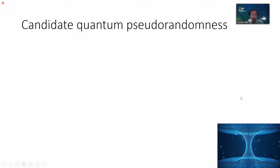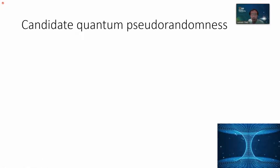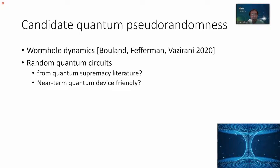Before concluding, let me talk about candidate quantum pseudorandom objects. The first candidate comes from Wormhole Dynamics — a concrete proposal by Bouland, Fefferman, and Vazirani in 2020, based on the wormhole Hamiltonian. Another candidate is random quantum circuits, an object already being considered in quantum supremacy literature and also in literature on black holes. One might even hope to implement quantum cryptography on near-term quantum devices from these quantum circuits.